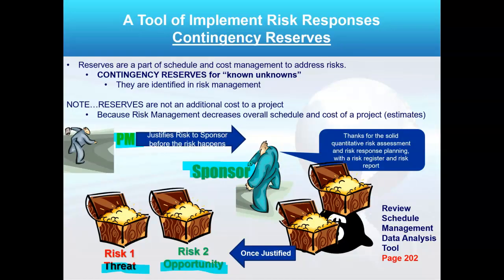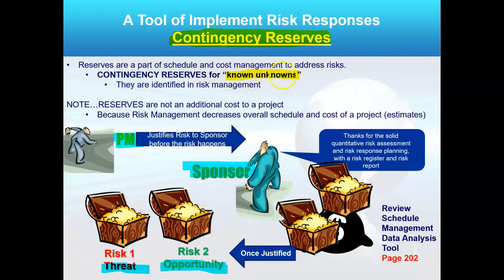There is this term in project management called contingency reserves. With contingency reserves, that's what you're planning for. Remember, we write down the initial plan in the risk register, but then we're going to plan and finalize it. This is for known unknowns — we know it's a risk, but the risk itself is an uncertainty, so what we don't know is if it will trigger or happen. The project manager identifies the risk, does some planning, and justifies it to the project sponsor — your boss, whoever owns the budget.